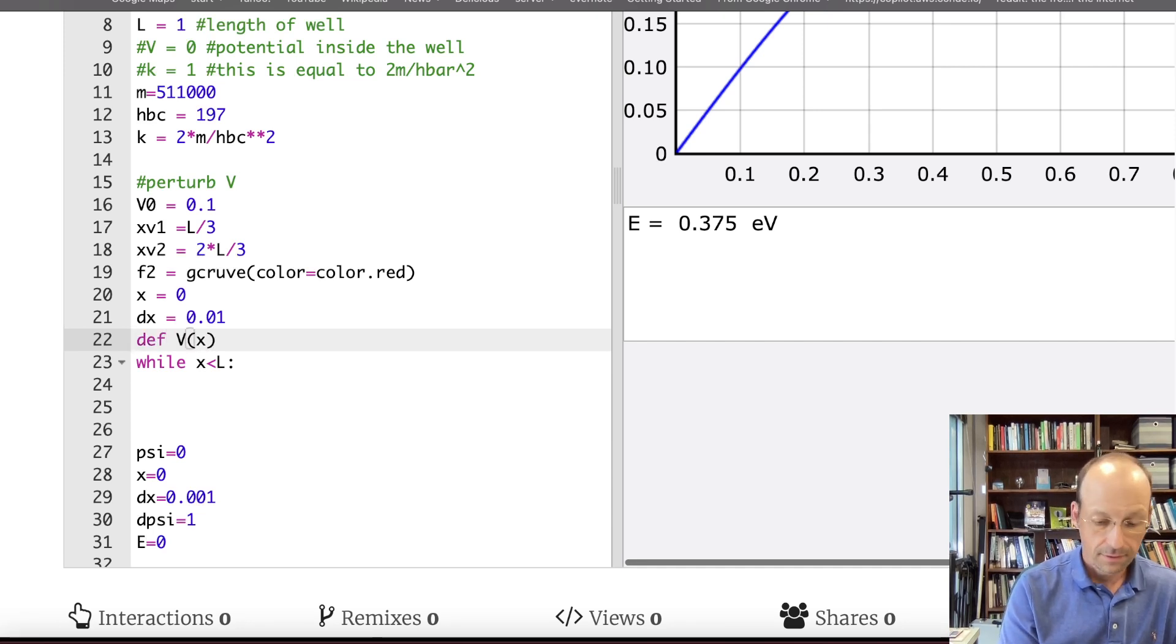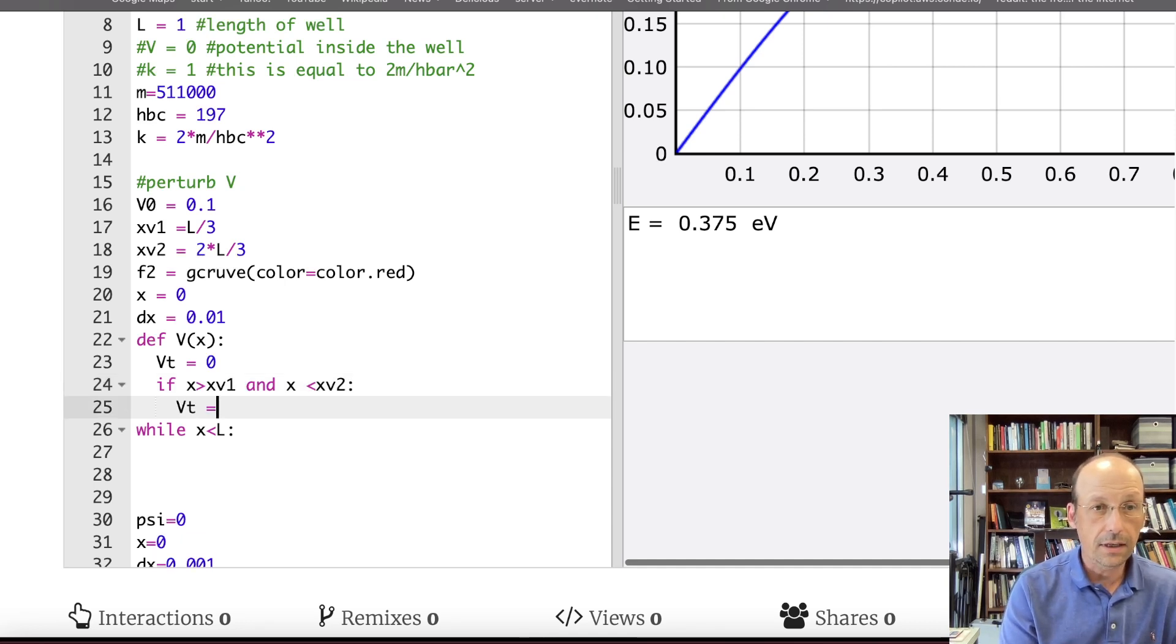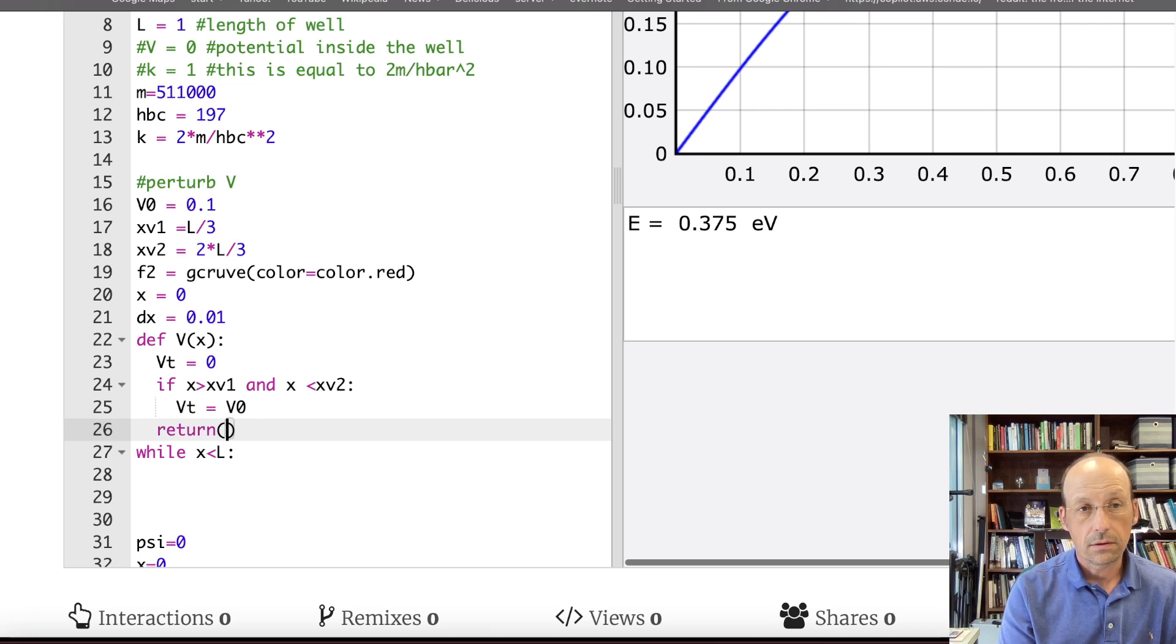Let's do this. I'm going to get rid of this right here. And I'm going to do this. Def V(x). I'm going to define the potential as a function. So I will say Vtemp equals 0. If x is greater than, let's call it L over 3, let's say XV1. And x is less than XV2. Then Vt equals V0. And then return Vt.